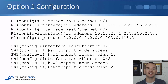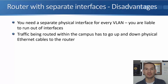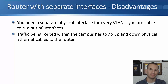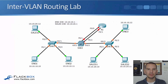Some disadvantages exist with using a router with separate interfaces: you need a separate physical interface for every VLAN, so unless you have very few VLANs, you're likely to run out of available physical interfaces. Also, traffic routed between different IP subnets has to travel up and down physical Ethernet cables to the router, which is slower than routing across the backplane of a Layer 3 switch — as you'll see in option 3.